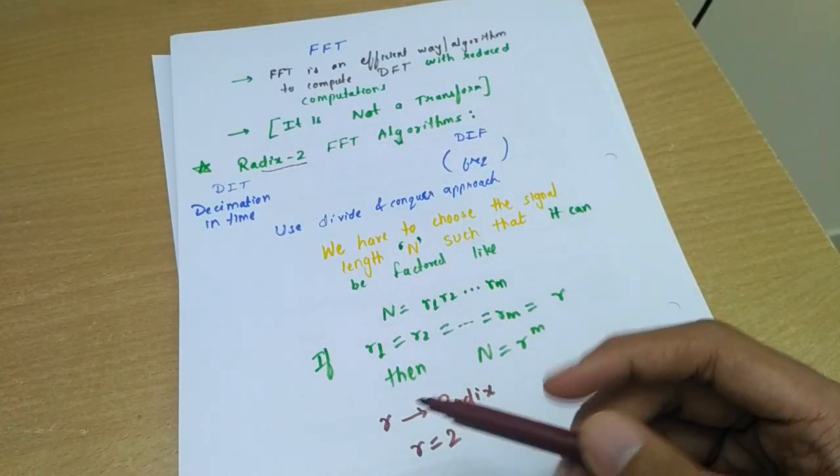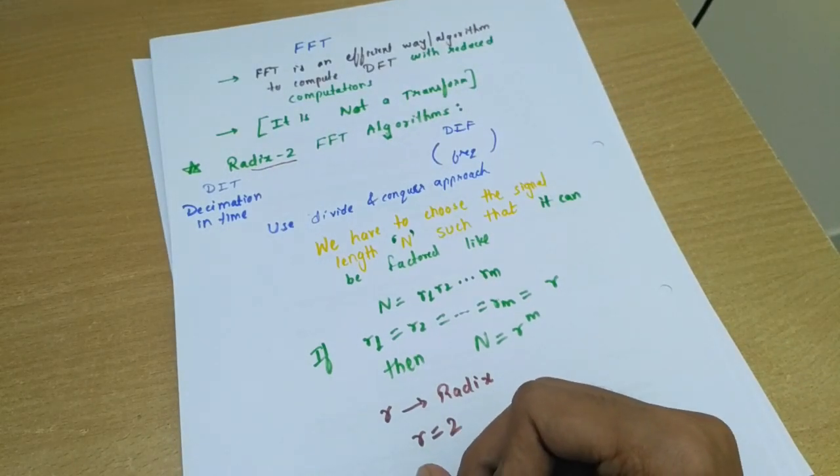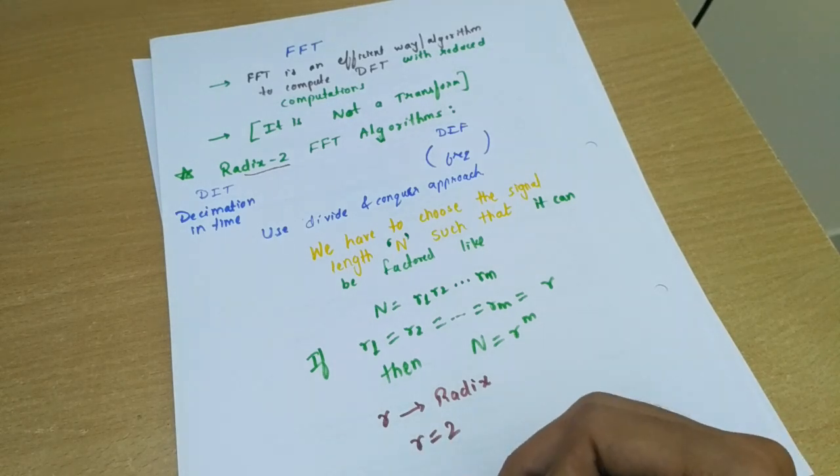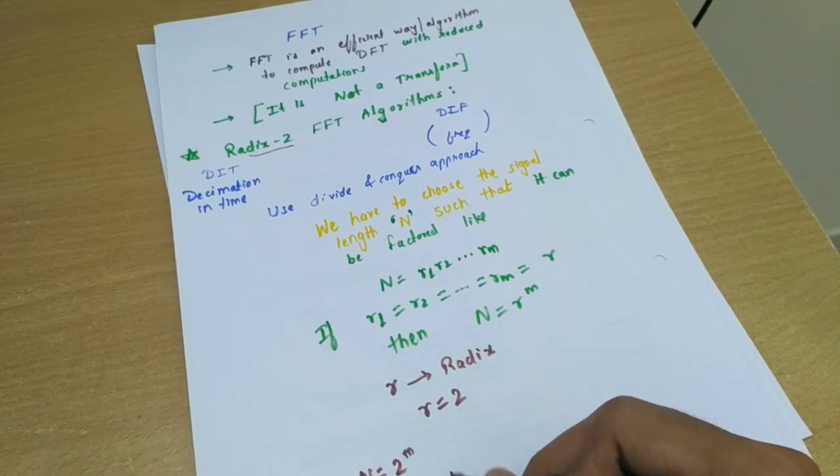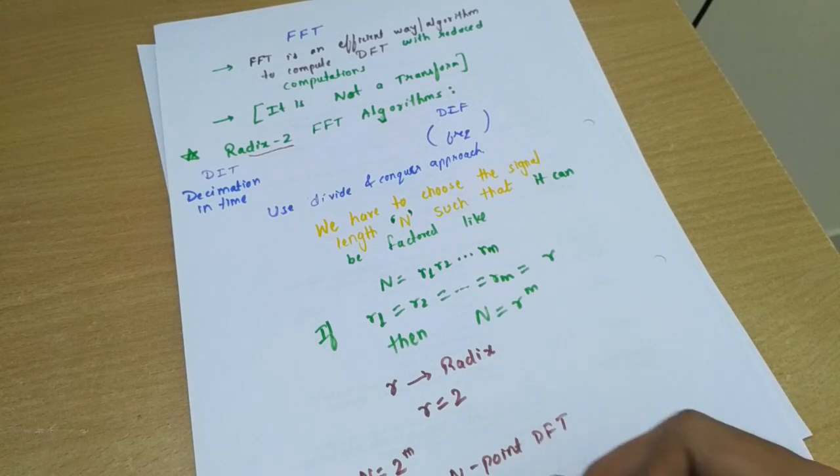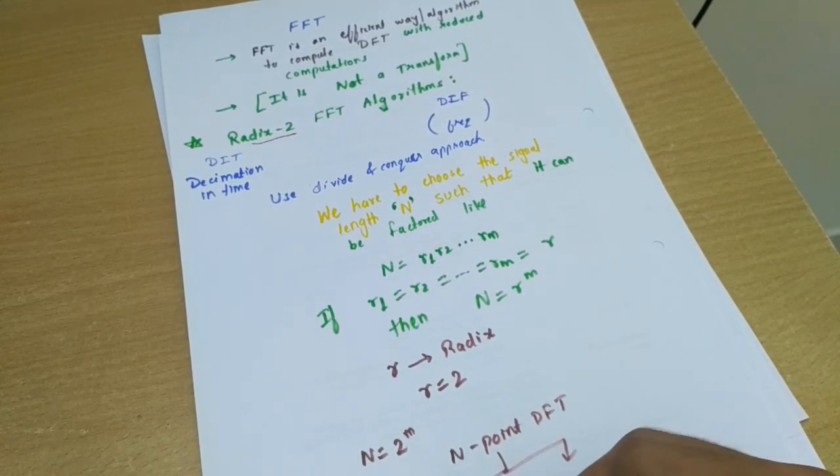Clearly we have N equals 2 raised to m. So the efficient computation is achieved by breaking the N-point DFT. So suppose we have length of the signal is N, so we have N-point DFT. So N-point DFT we will break into 2 N by 2 point DFTs.